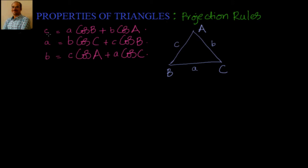c equal to a·cos(B) plus b·cos(A). We will take A as the base now, because we have taken A as the base.